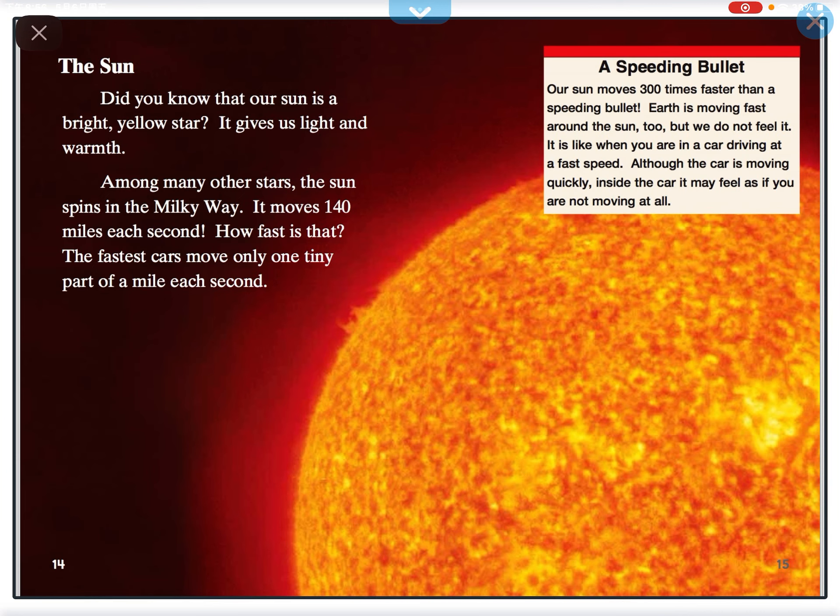The sun. Did you know that our sun is a bright yellow star? It gives us light and warmth. Among many other stars, the sun spins in the Milky Way and moves 140 miles each second. How fast is that? The fastest cars move only one tiny part of a mile each second.